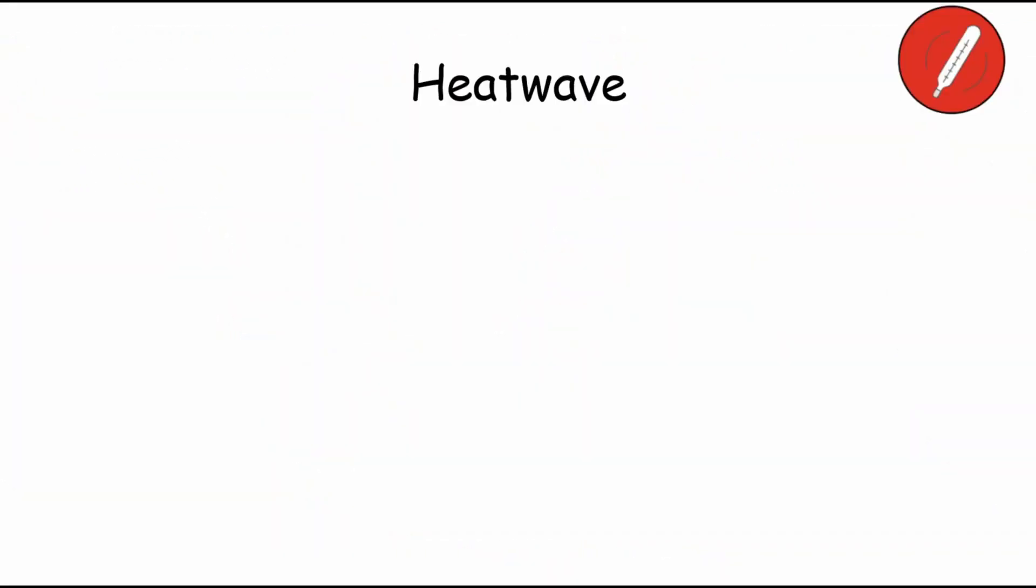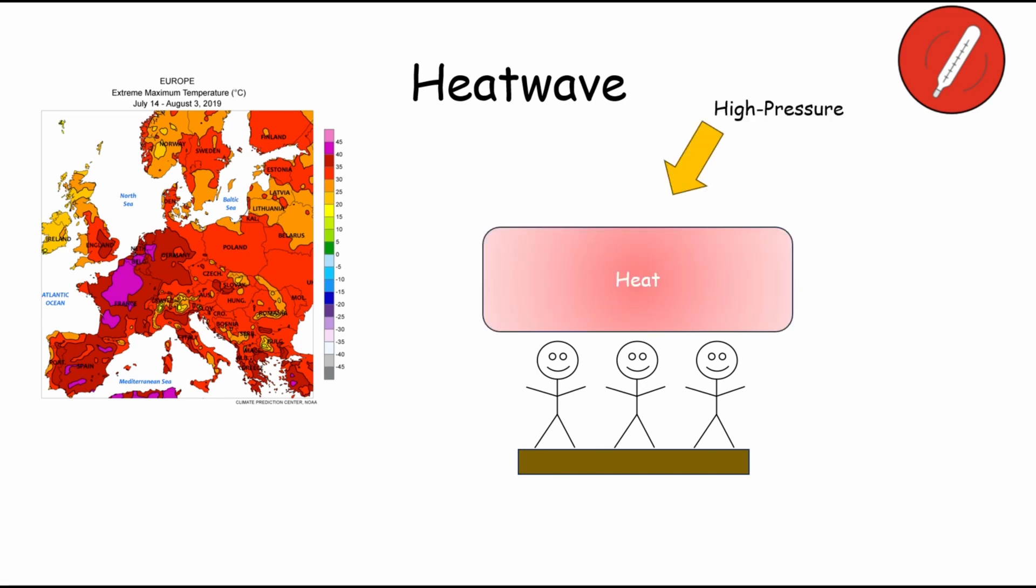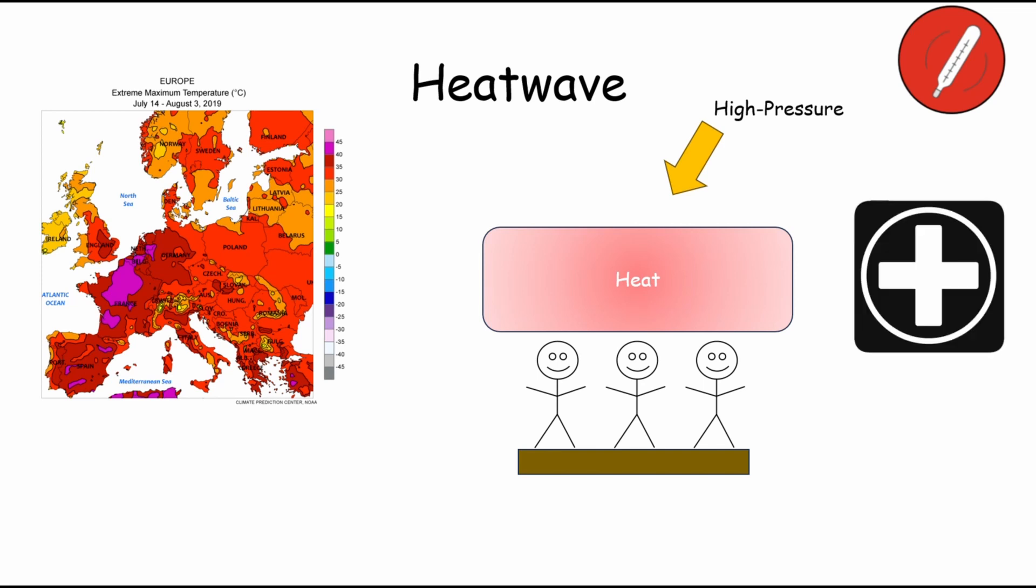A heatwave is a prolonged period of excessively hot weather, typically lasting several days to weeks, and often accompanied by high humidity. These extreme weather events occur when a region experiences a persistent high pressure system, which traps warm air near the surface and prevents the dispersion of heat. Heatwaves can lead to dangerously high temperatures, posing significant risks to human health, particularly for vulnerable populations.